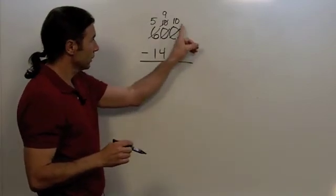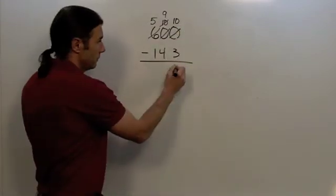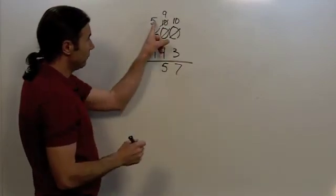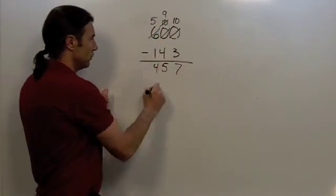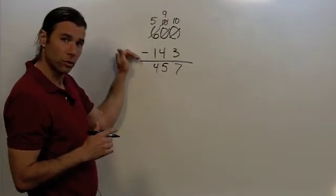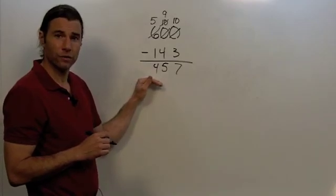Again, starting at the right, 10 minus 3 is 7. 9 minus 4 is 5. And then 5 minus 1 is 4. So when I take 600 and subtract 143 from it, I get an answer of 457.